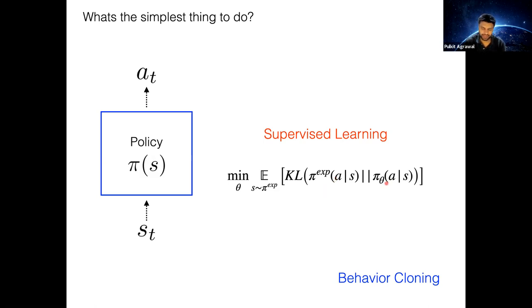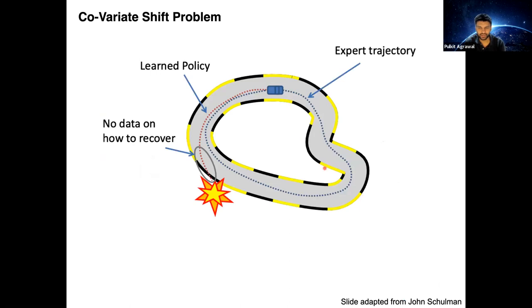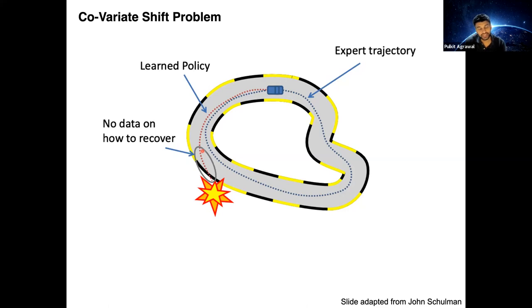Now, if we learn this policy, there can be issues. For example, suppose the expert provided a trajectory for a car driving around. If the system makes even a small error, it can tragically deviate, ending up in a region of state space where it has no guidance from the expert — because those states were never in the training set. In those states, the policy could output nonsensical actions.